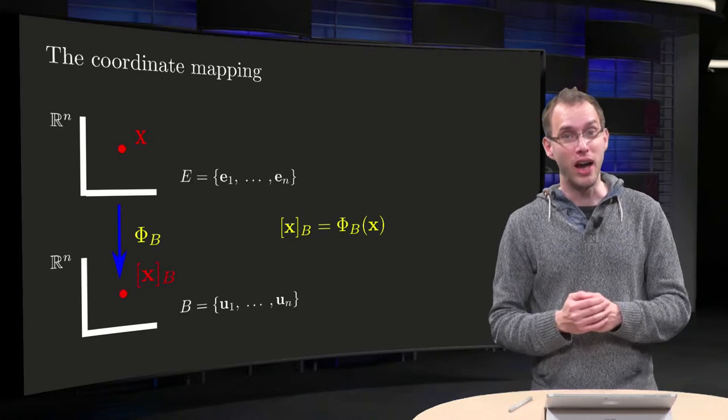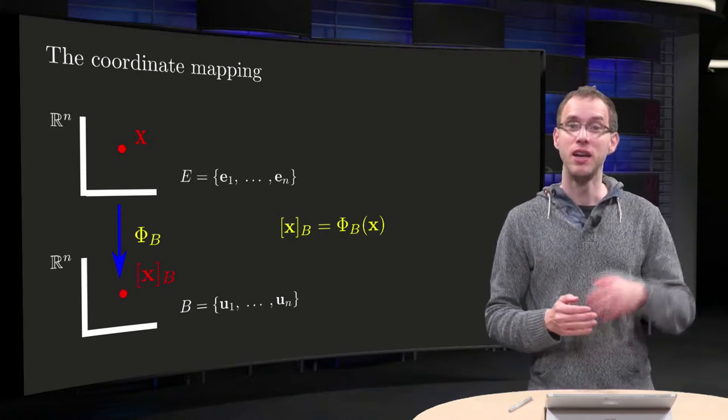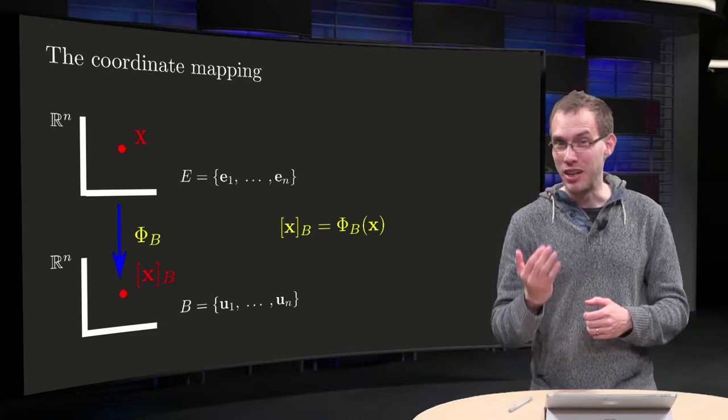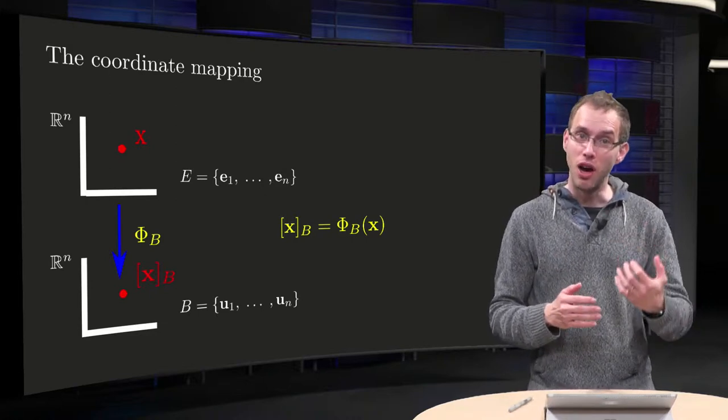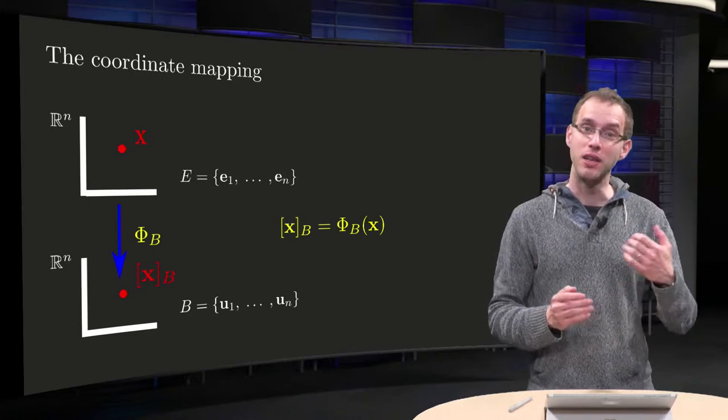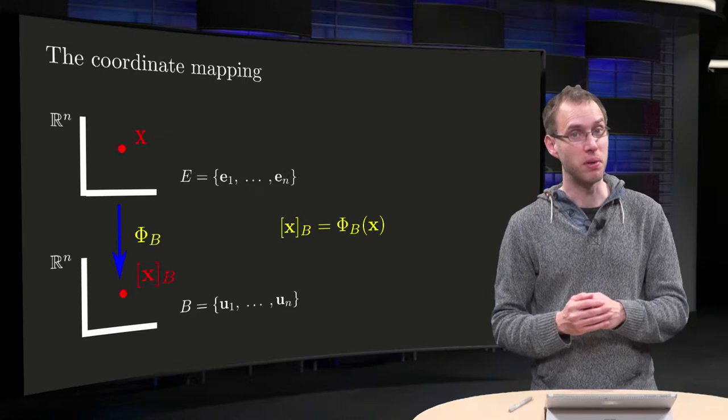If your vector space is Rn with the standard basis, this mapping is implemented by a matrix Pb, and that is really nice because this allows us to choose any basis B for Rn we like and use this matrix Pb to find our original x back.